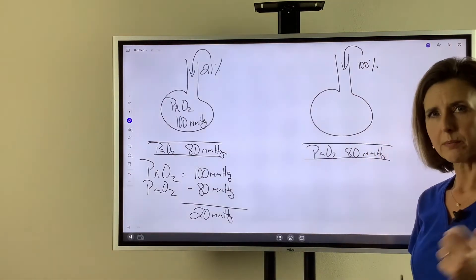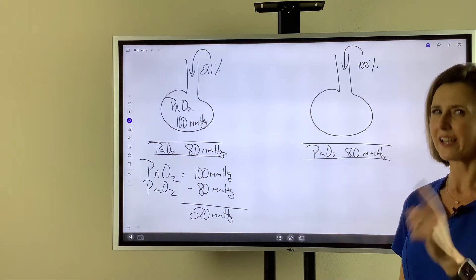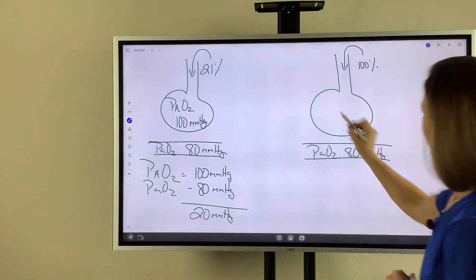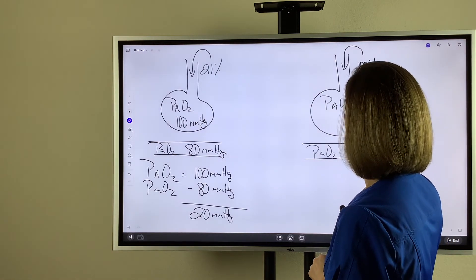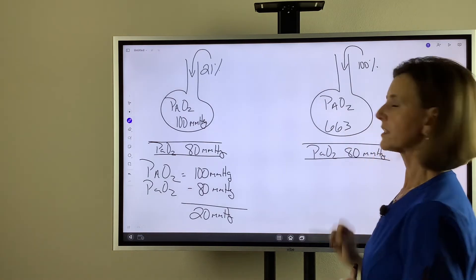This is where some people make a mistake. They think a PaO2 of 80 is normal, so there's nothing to worry about. But you actually do. If you calculate the alveolar oxygen tension, it's going to be 663.